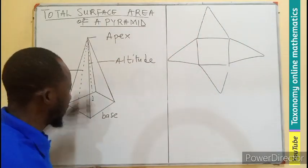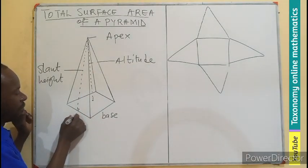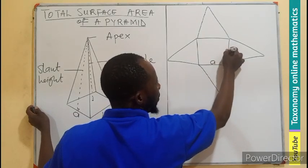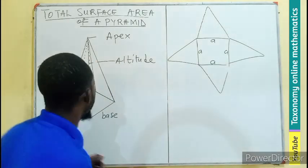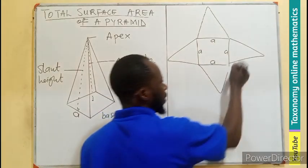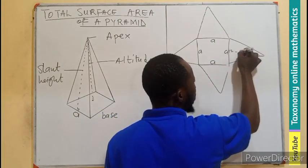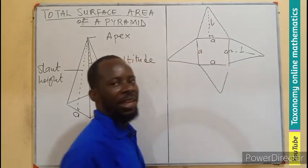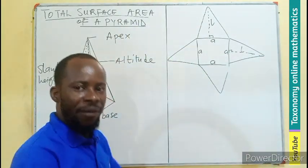If I label the side of the base as 'a', then all four sides of the square base are 'a', since it is a square base. If I label the slant height as L, we know it is perpendicular to the base. So this is the slant height — perpendicular to the base.